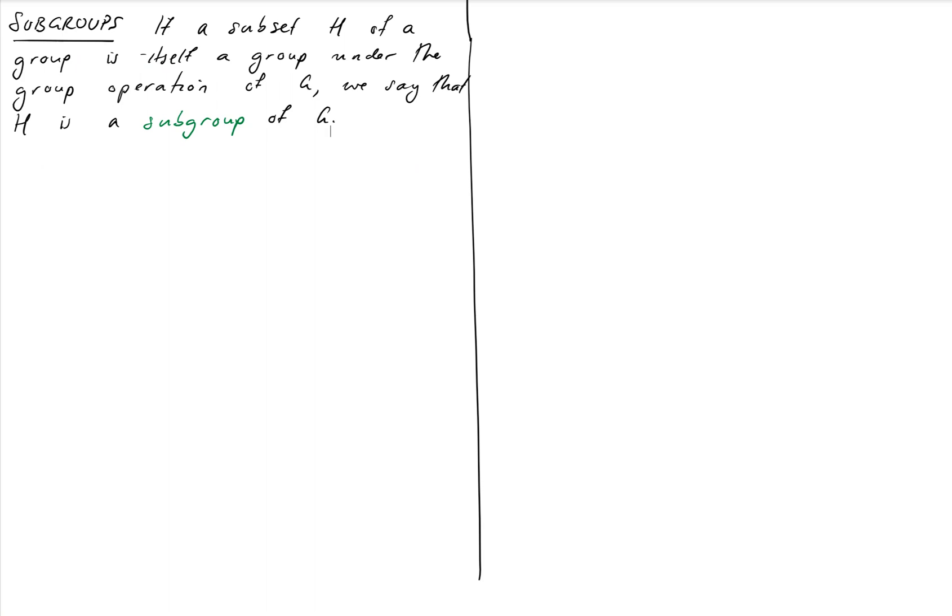So the definition is, if a subset H of a group is itself a group, and here's the key part, under the same group operation as G. So we can't have a set that is a group under a different operation. Then we say that H is a subgroup of G.